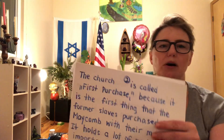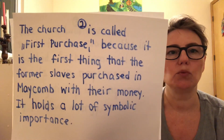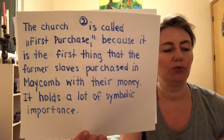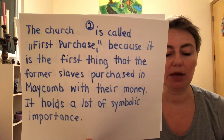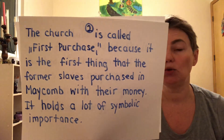The name of the church is very important — it's called First Purchase. The name shows how religion was very important for everyone at that time, and especially for people who had been slaves. They were not slaves anymore — they had newly become free people — and the first thing they did as a community was collect money and purchase this church. That church was very important to them because they wanted to pray to God independently.